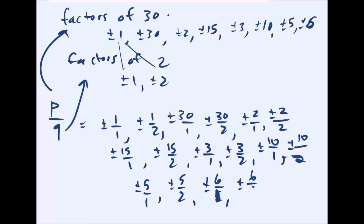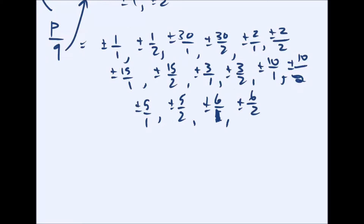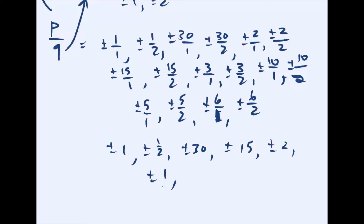Those are all the possible rational zeros — looks like about 30 different options. When you simplify them you have plus or minus 1, plus or minus one-half, plus or minus 30, plus or minus 15, plus or minus 2, and so on. Some of these will actually repeat, so we won't have quite that many unique options.